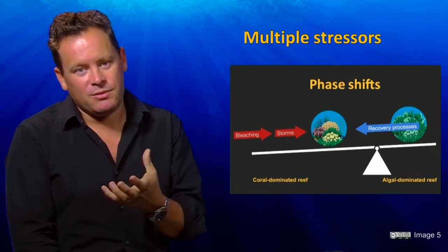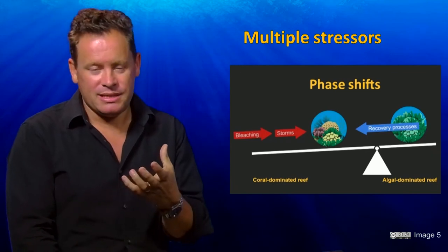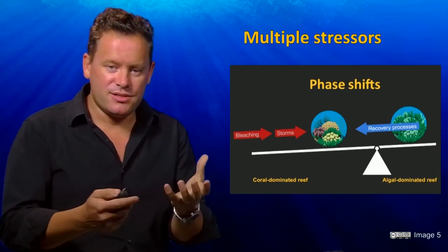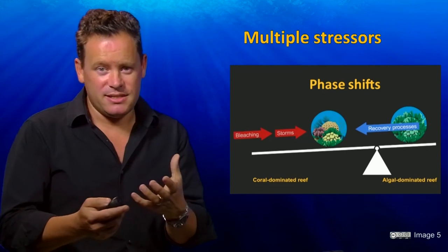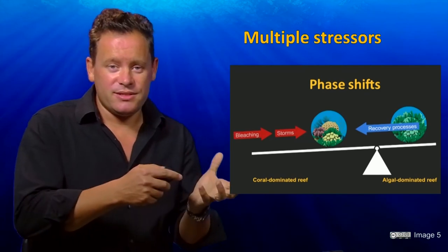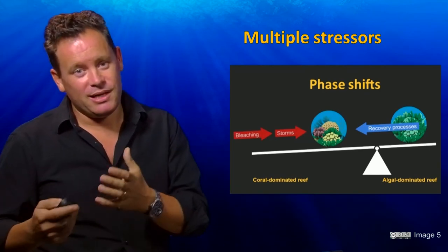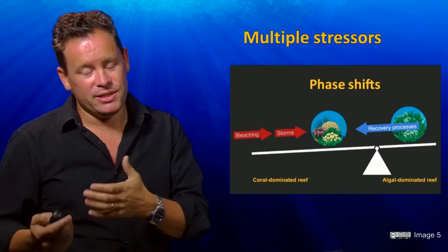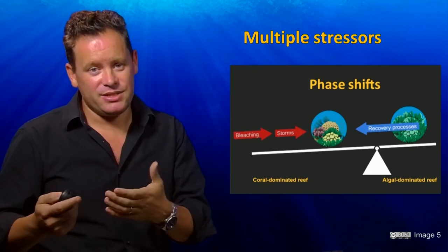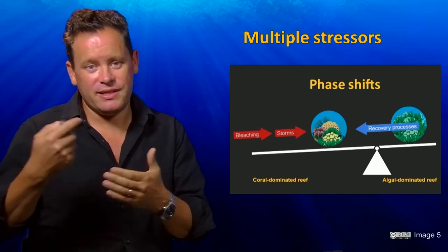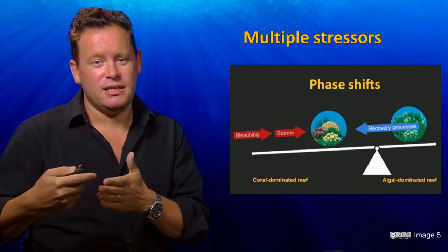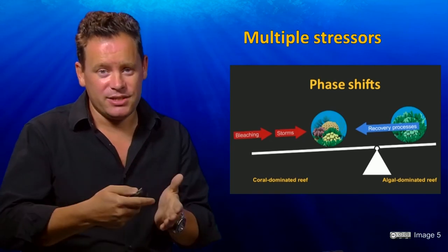When you put all this together, what we're concerned about is a shift in the balance of coral reef ecosystems from coral dominance towards seaweed or algal dominance — something we talked about in the previous lecture. All of these stresses are pushing the system in the wrong direction.